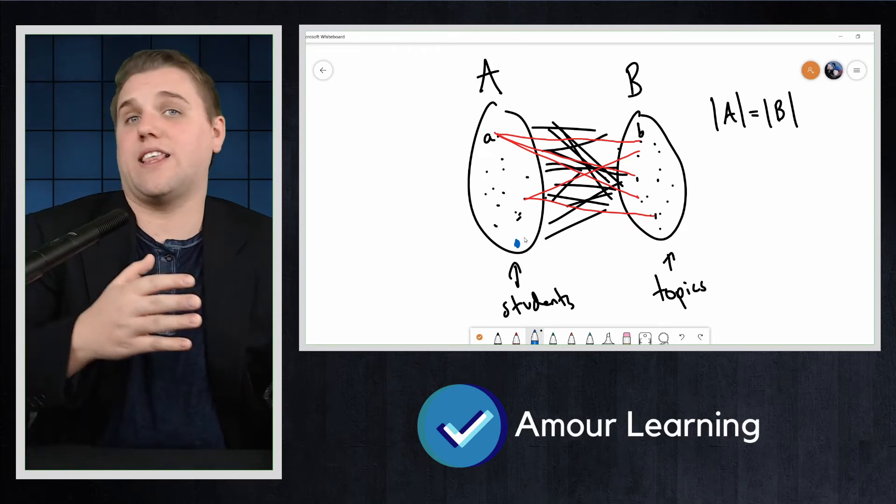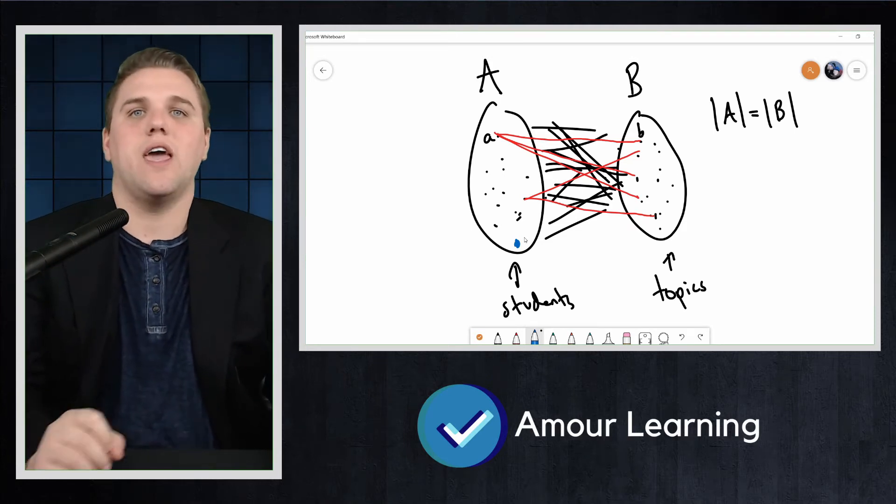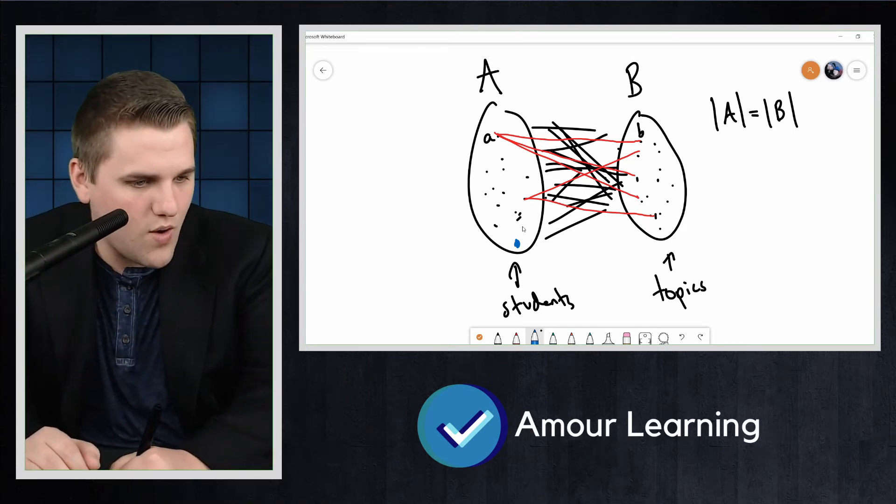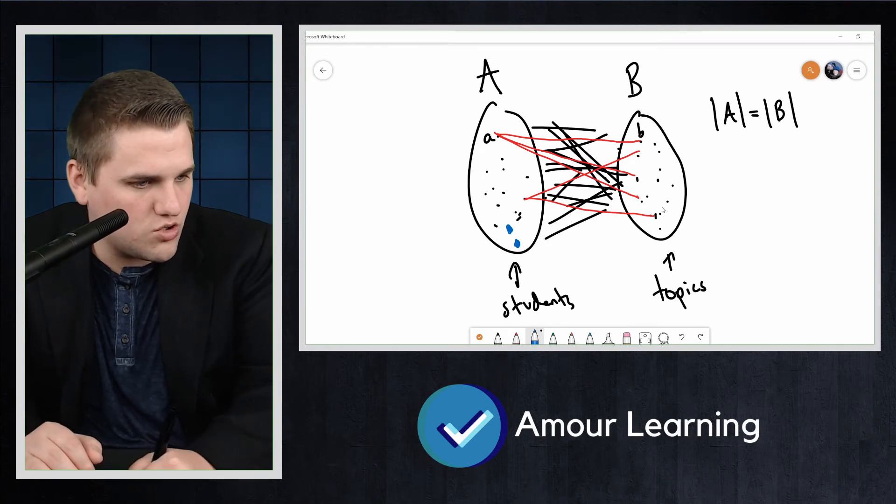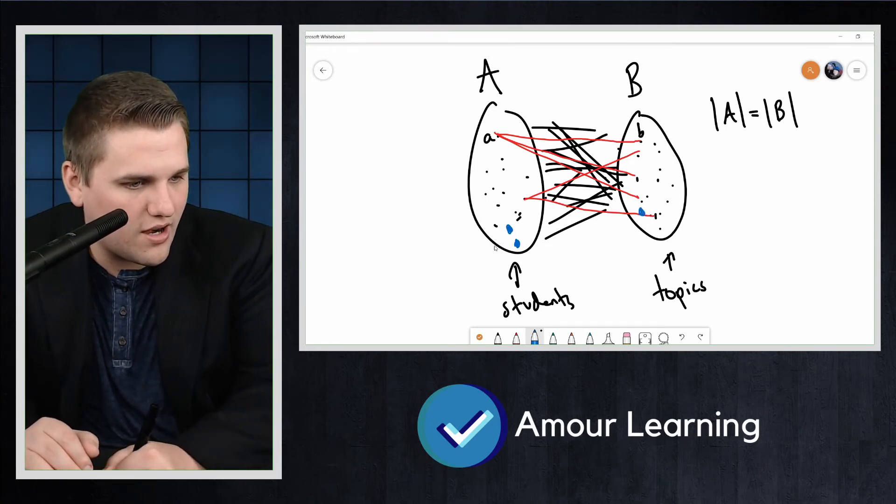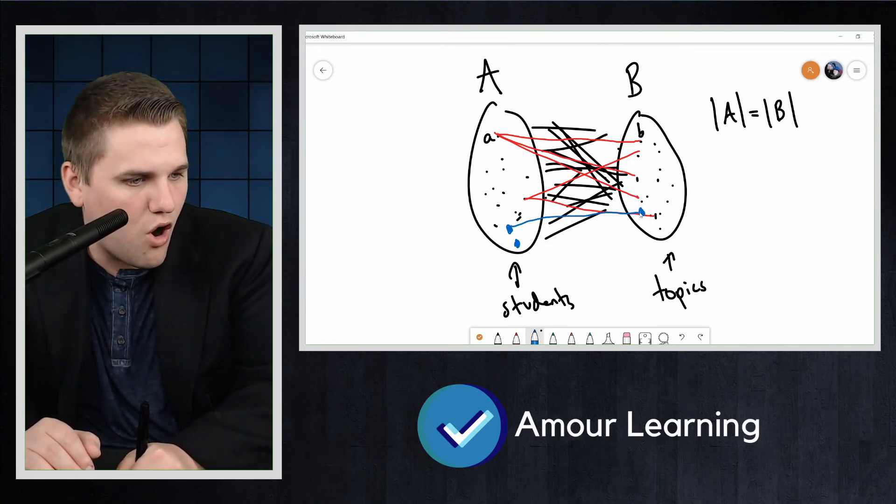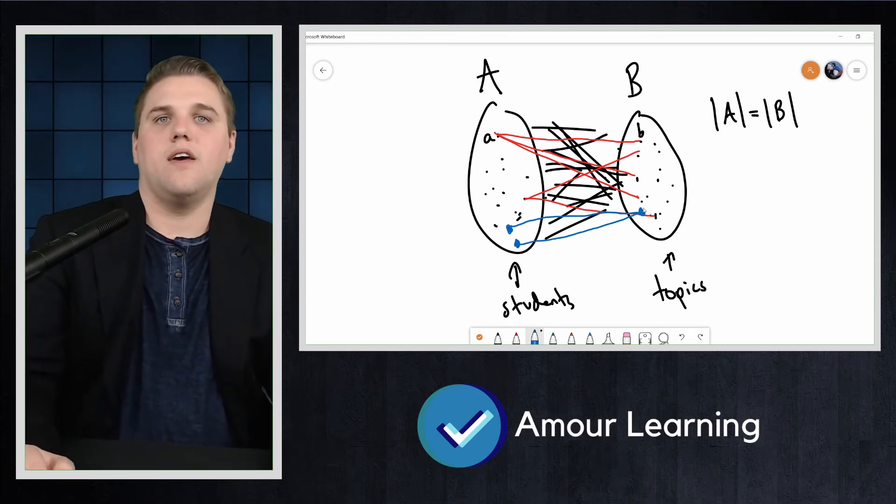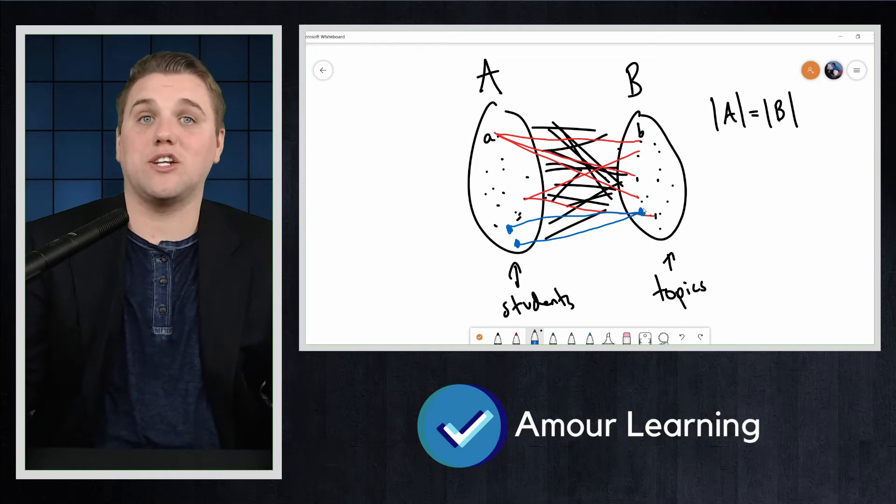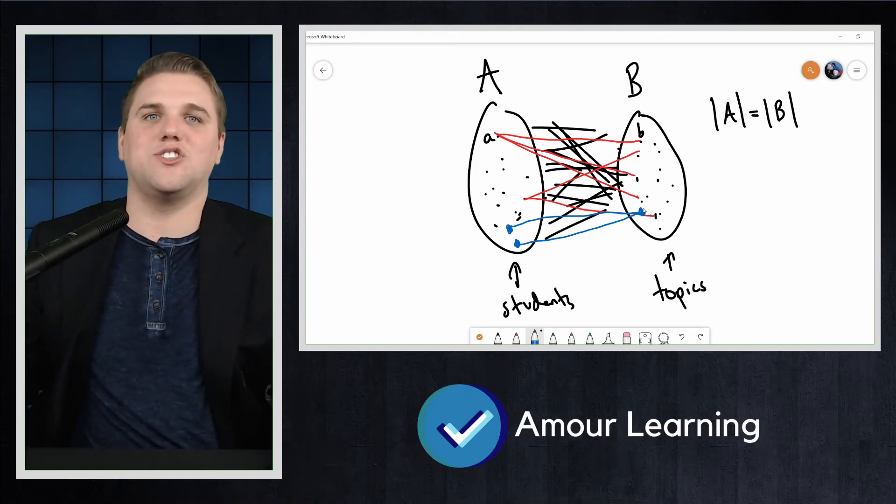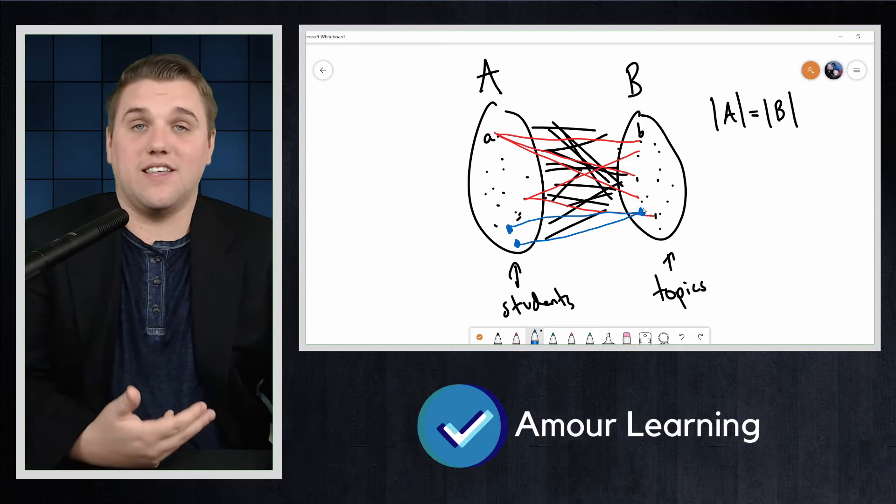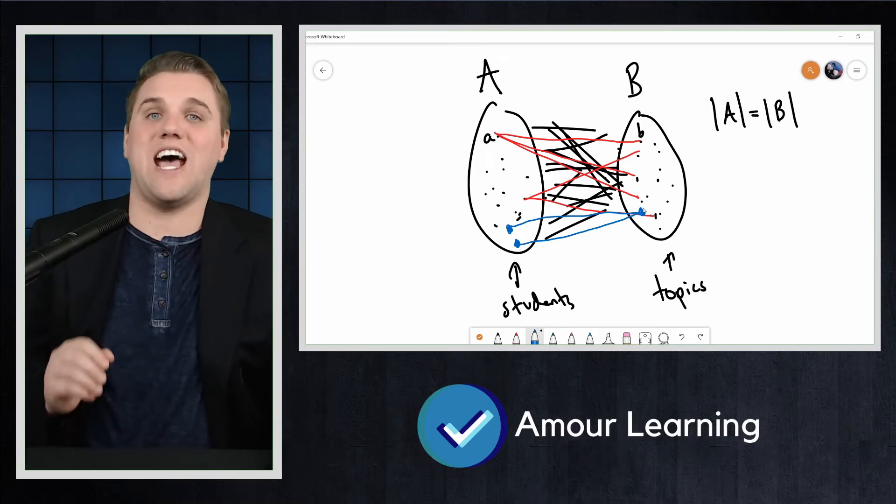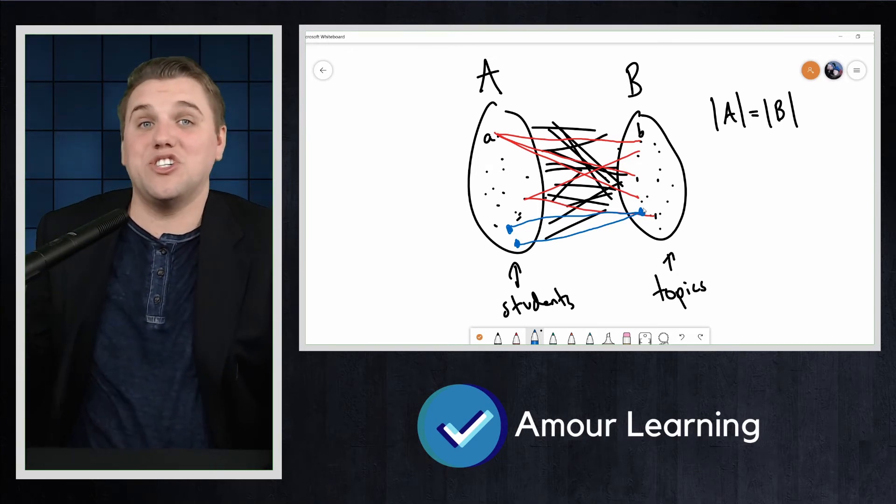What if two students both like the same one topic and no others? Say you have two students and one topic here, and they both only pick that one topic. Then after assigning that one topic to the first student, there's nothing left for the second student to like in this case. So it is very much as if the second student has degree zero.